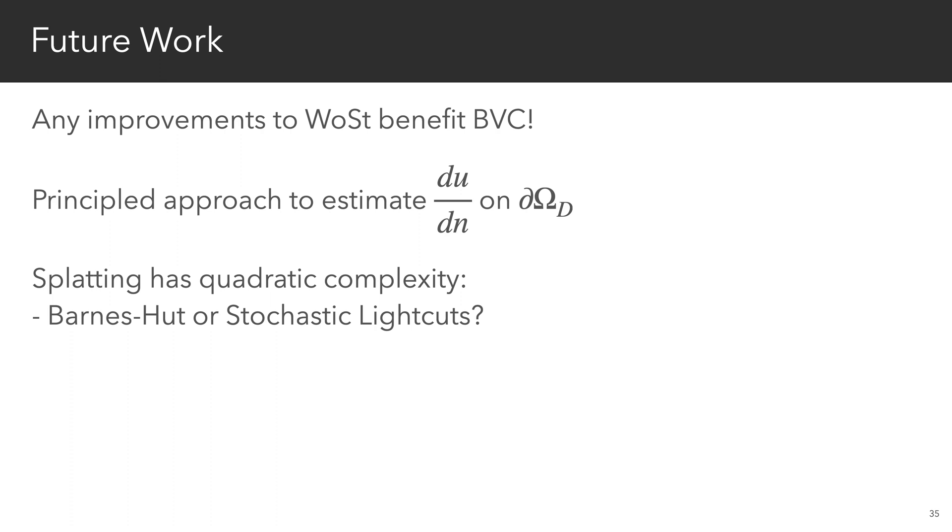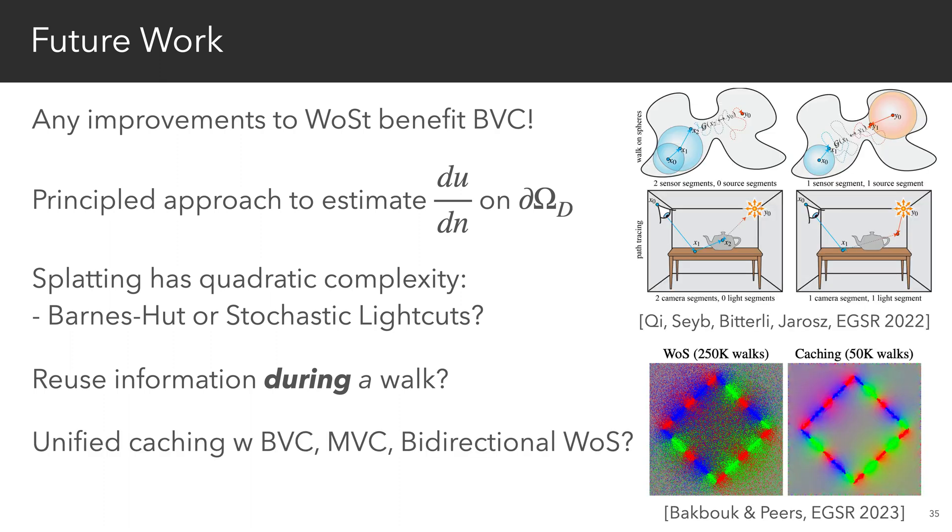Evaluating the boundary integral equation inside the domain currently suffers from quadratic complexity, so incorporating techniques such as Barnes-Hut and stochastic leg cuts should significantly improve performance. It's also worth exploring how we can improve estimates from individual random walks by reusing information during the walk itself. And finally, it may be possible to develop a unified caching scheme that incorporates other recent variance reduction techniques such as bidirectional walk-on-spheres or mean value caching. It seems like there's still a lot of scope for reducing variance and sharing information across walks.